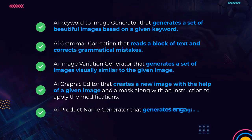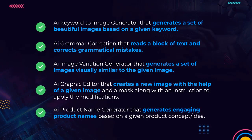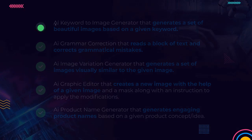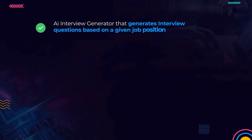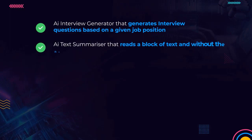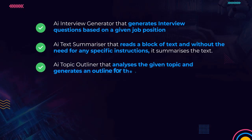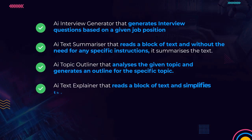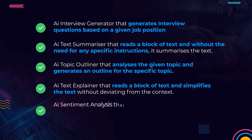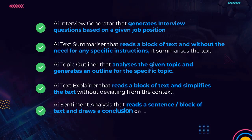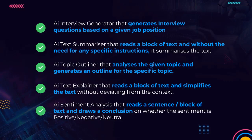An AI product name generator that creates engaging product names based on a given concept or idea. An AI interview generator that produces interview questions based on a given job position. An AI text summarizer that reads a block of text and summarizes it without needing specific instructions. An AI topic outliner that analyzes a given topic and creates an outline for it. An AI text explainer that simplifies a block of text without deviating from the context. An AI sentiment analysis tool that reads text and determines whether the sentiment is positive.